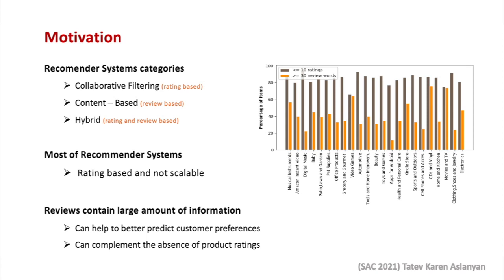Recommender systems are usually clustered into three classes: collaborative filtering algorithms, content-based algorithms, and hybrid recommenders. The existing recommender systems are mainly of collaborative type, and they use only the product ratings as means of learning about user preferences. Whereas, using additional sources of information such as product reviews or information about the users and items can help to learn better about the customers and products.